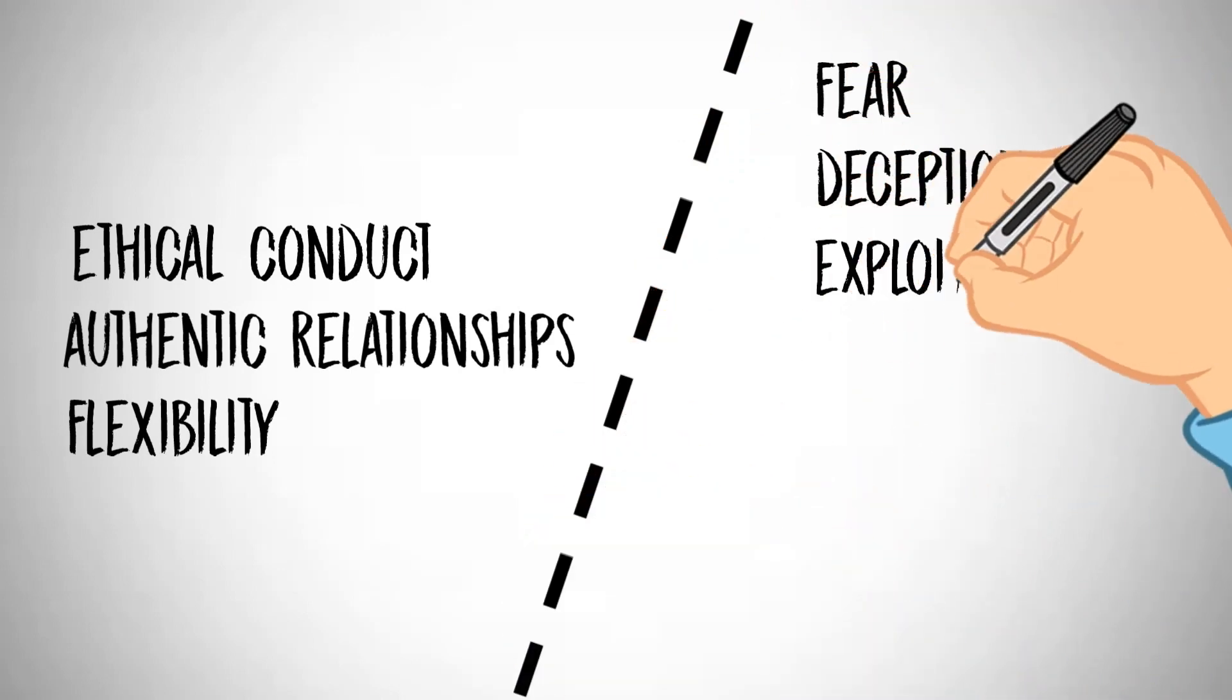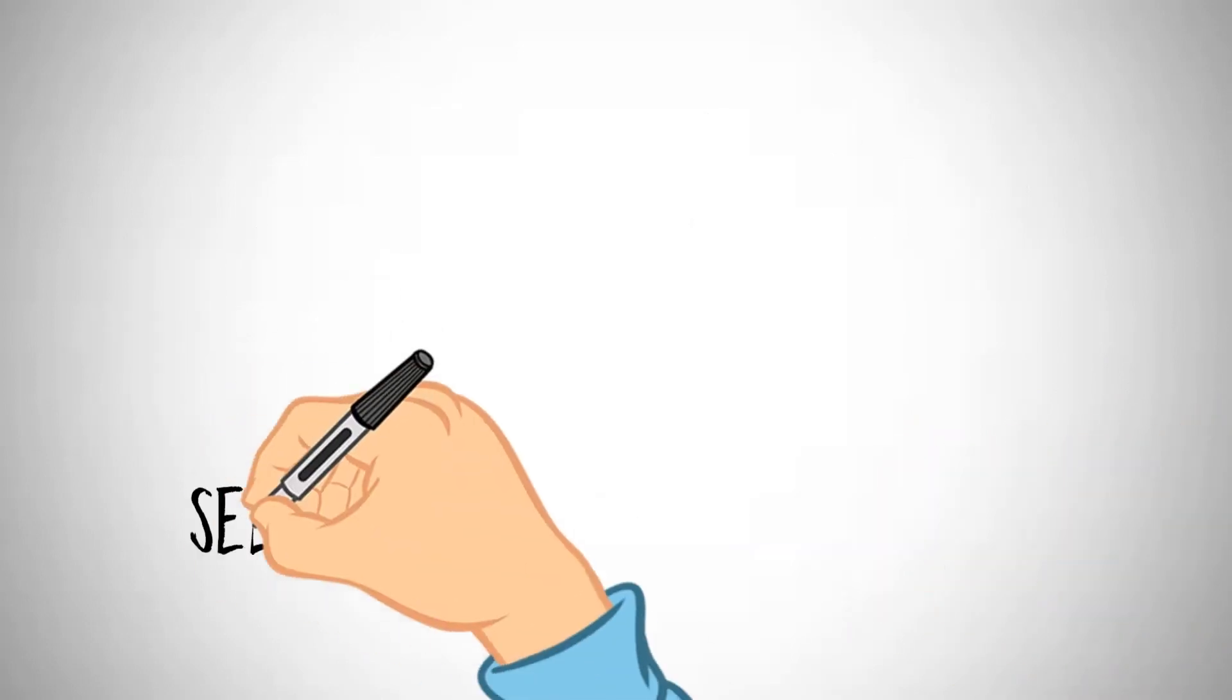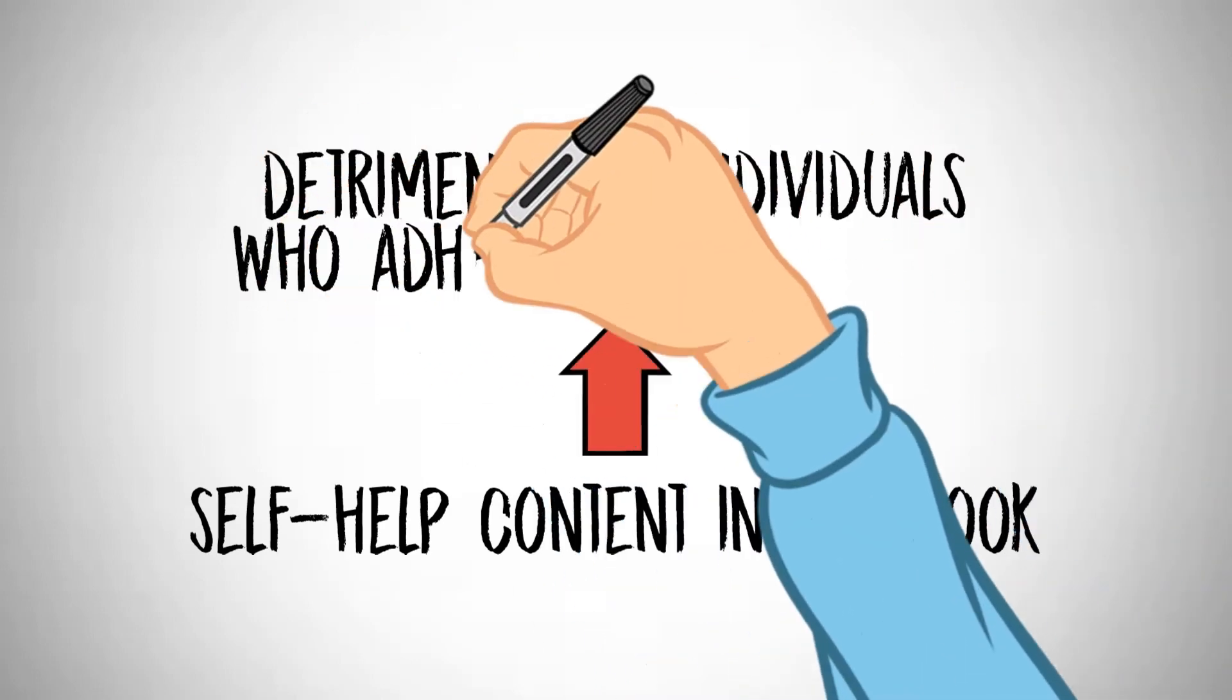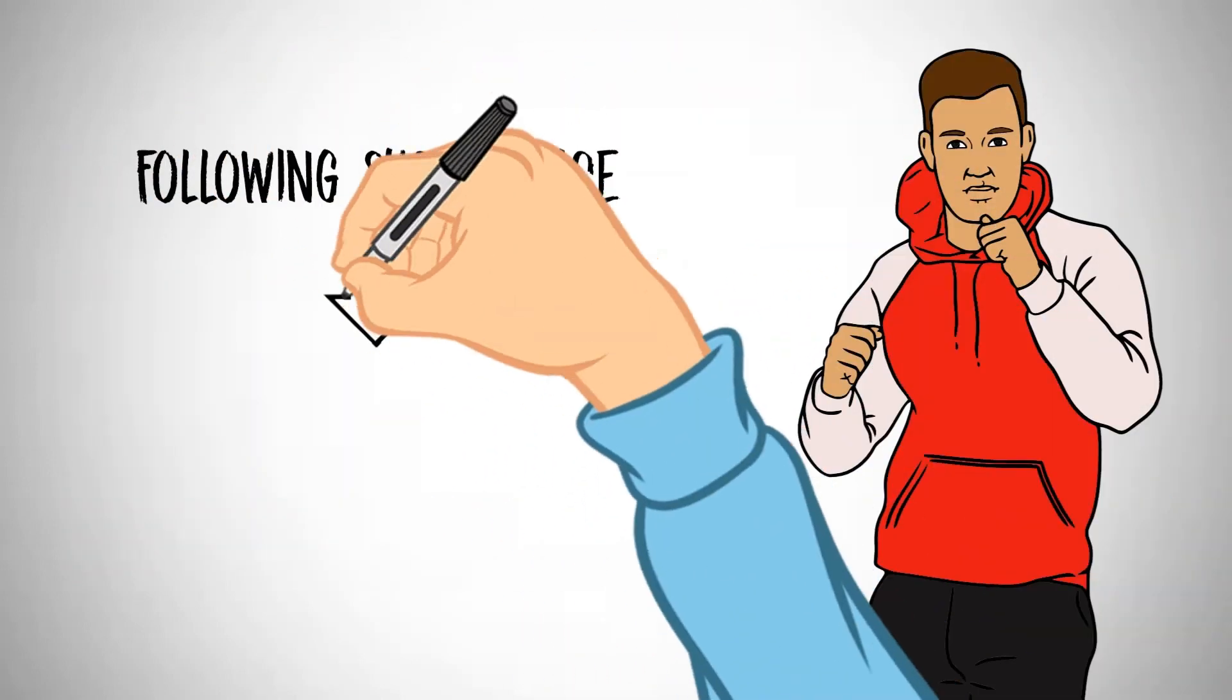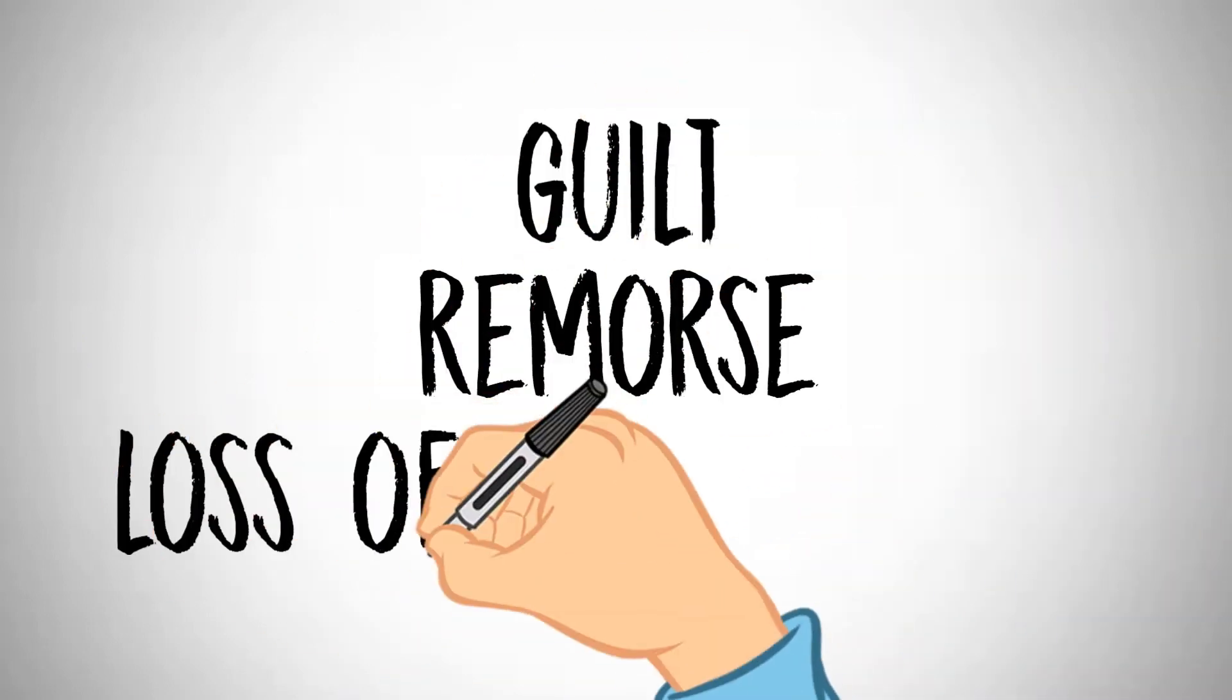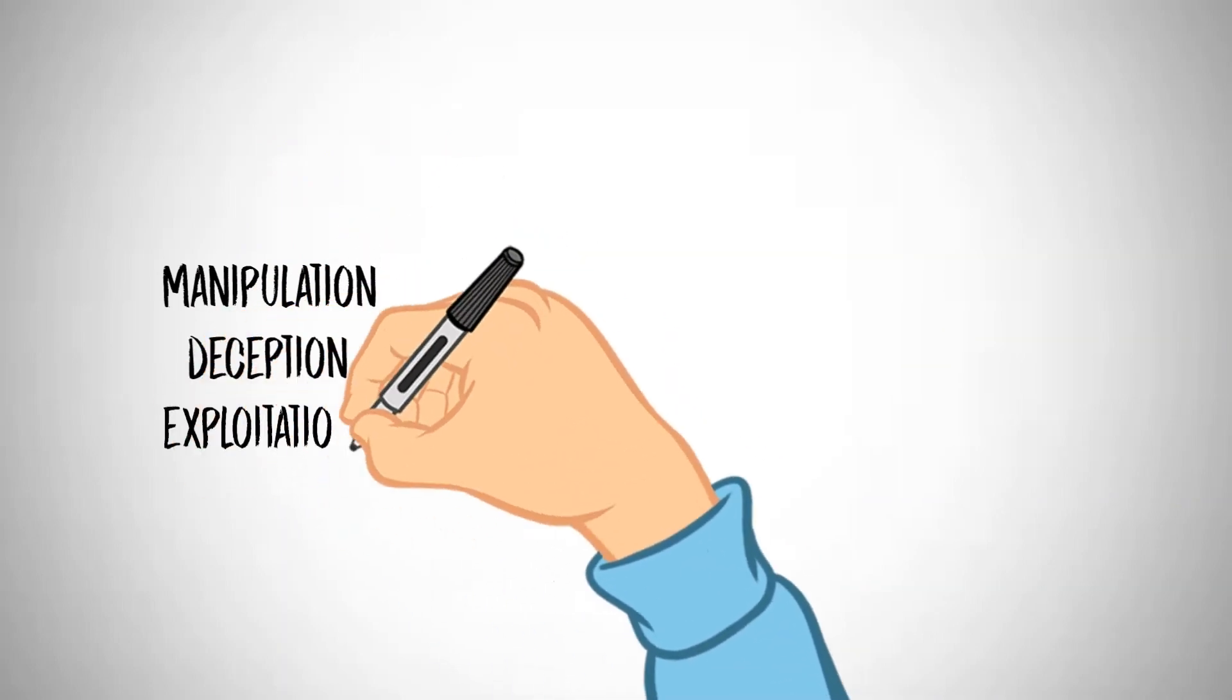This unpredictability can lead to instability and anxiety, making it tough to maintain a consistent power base. In essence, while the book's strategies could yield short-term advantages, they frequently neglect the significance of ethical conduct, authentic relationships, and flexibility. Relying solely on fear, deception, and exploitation is likely to be unsustainable and counterproductive in the long run. The so-called self-help content in the book might actually be detrimental to individuals who adhere to its guidance for a few reasons. The book's advice encourages tactics that often disregard ethical considerations.